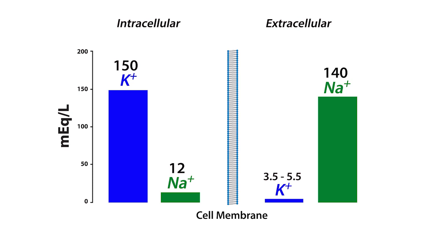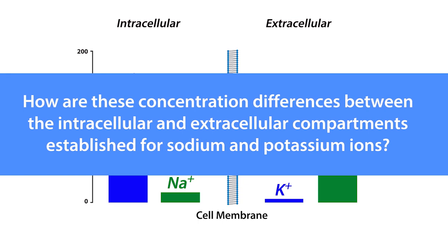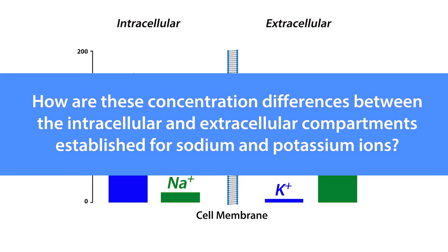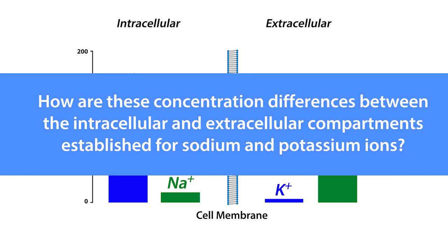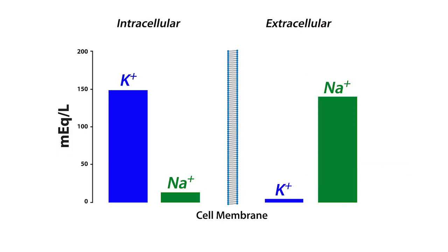Now that we know that, let's ask this question: how are these concentration differences between the intracellular and extracellular compartments established for sodium and potassium ions? Well, the concentration differences are established by the sodium-potassium ATPase. The sodium-potassium ATPase transports three sodium ions from the intracellular fluid compartment to the extracellular fluid compartment in exchange for two potassium ions.